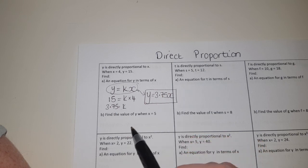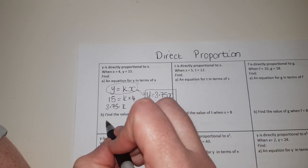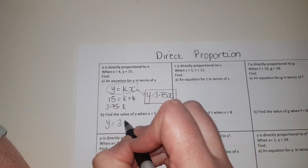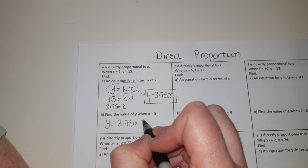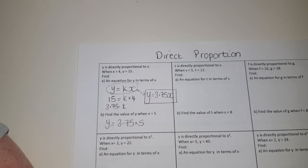You just need to replace any unknown letters with a number. Once you've got this you can use it to find any value you're looking for. So for part b, find the value of y when x equals 5. Well y is equal to 3.75 times by 5. That gives us 18.75, and that's it, question one done.